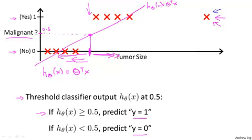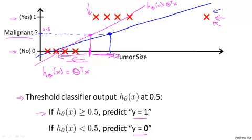But once we've added that extra example out here, if you now run linear regression, you will instead get a straight line fit to the data that might maybe look like this. And if you now threshold this hypothesis at 0.5, you end up with a threshold that's around here.